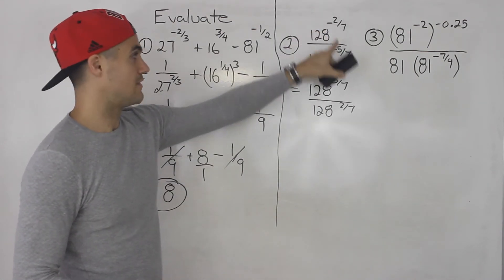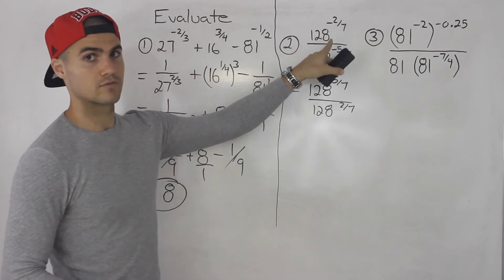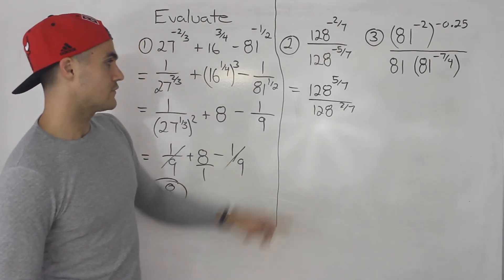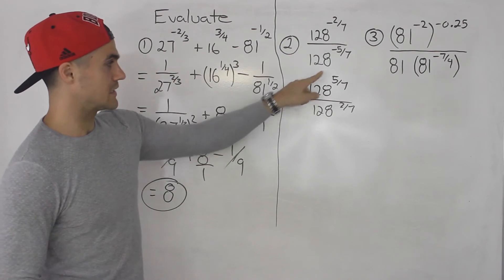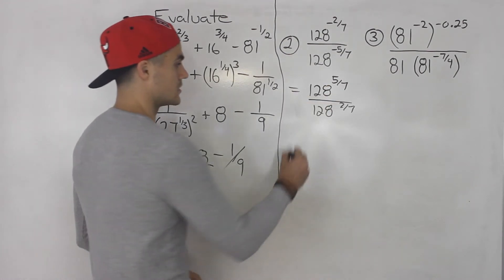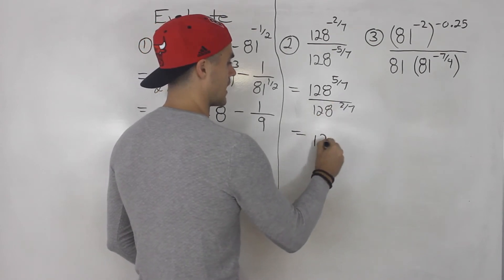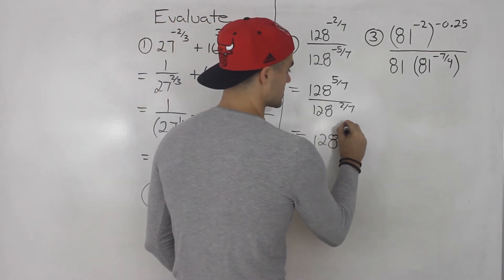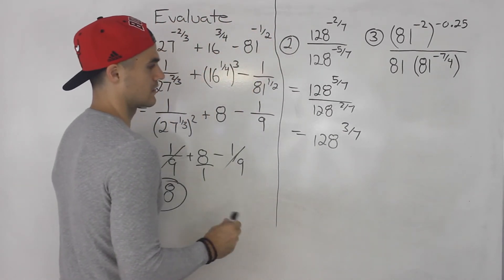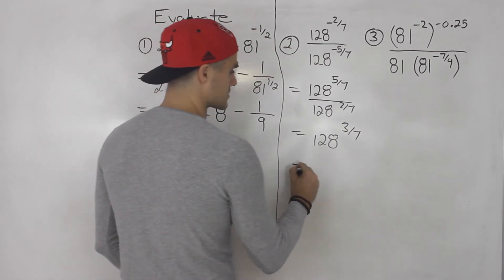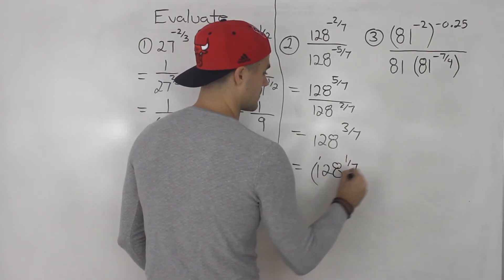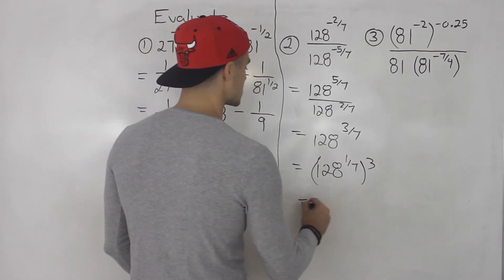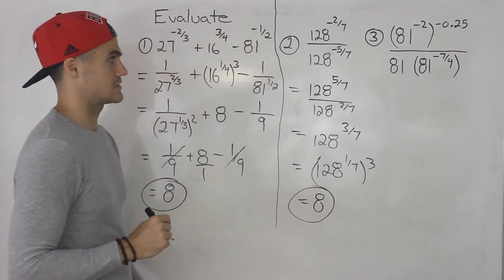Now if the numerator exponent had been positive 2 over 7, we would just bring this up and multiply. But because it was negative as well, we bring it down. Now notice these have a common base, so we subtract the exponents. We're dividing, so we have 128 to the power of 5 over 7 minus 2 over 7 — those already have common denominators — giving us 128 to the power of 3 over 7. Splitting that up: 128 to the power of 1 over 7, to the power of 3. The 7th root of 128 is 2, and 2 to the power of 3 is 8. So the answer to number 2 is 8 as well.